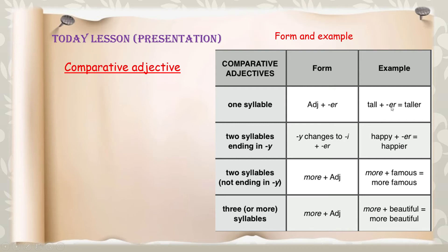For two-syllable adjectives ending in -y, we change -y to -i and add -er. For example, 'happy' ends in -y, so we change it to 'happier'. For two-syllable adjectives not ending in -y, we add 'more' before the adjective. For example, 'famous' has two syllables, so it becomes 'more famous'.